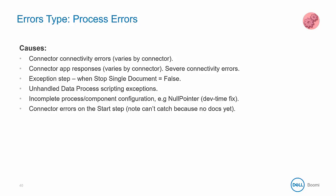A process error could also be a connector app response — when you can connect to an application but the application itself can't return any meaningful response. Process errors can also be created programmatically within the process itself using the exception shape. When the stop single document option is unchecked, this will generate a process-level error, meaning all documents in that process will stop. These errors can also happen when scripts fail, when a component is not fully configured, or when the start shape itself fails or returns nothing.